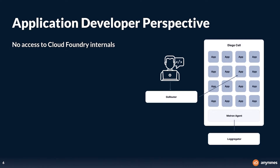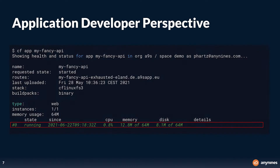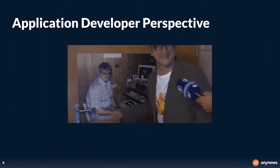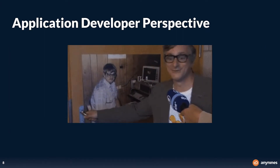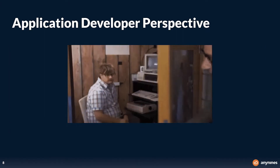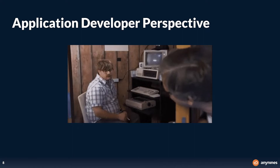With the command cf app, you can collect some basic system metrics, but you can't use them to set up alerts. Or do you really want to sit in front of your computer and observe the metrics manually?